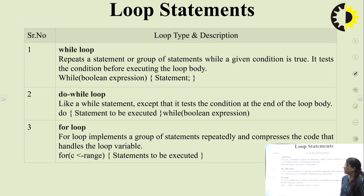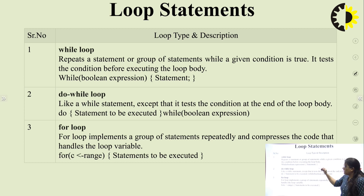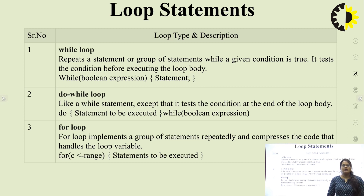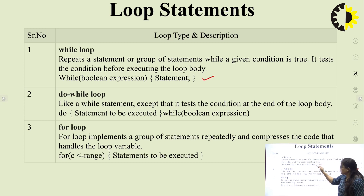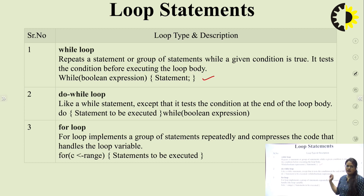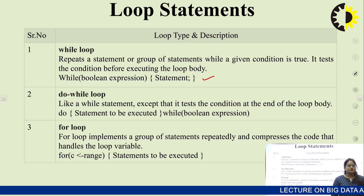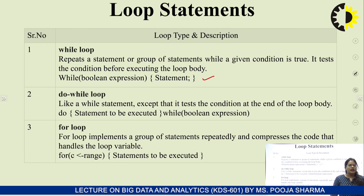Next is loop statements. There are three loops: while loop, do-while loop, and for loop. The syntax of while and do-while in Scala is similar to Java. The while loop repeats a statement while a given condition is true and tests the condition before executing the loop body. The do-while loop is like the while loop except it tests the condition at the end, meaning it executes at least one time.